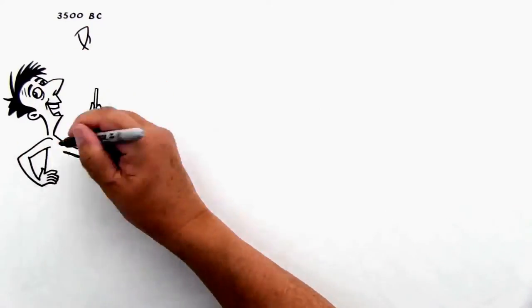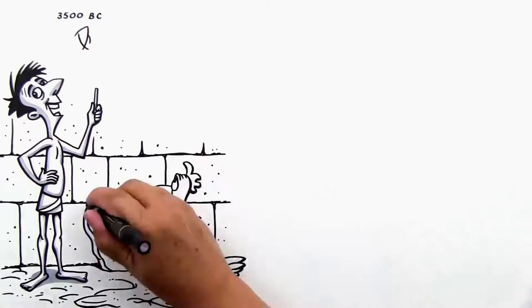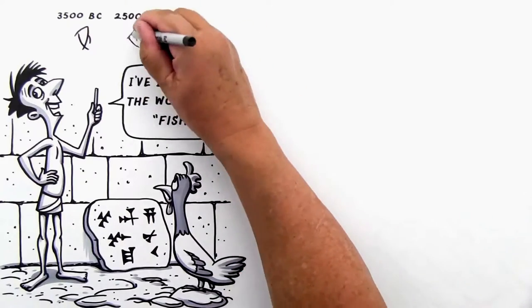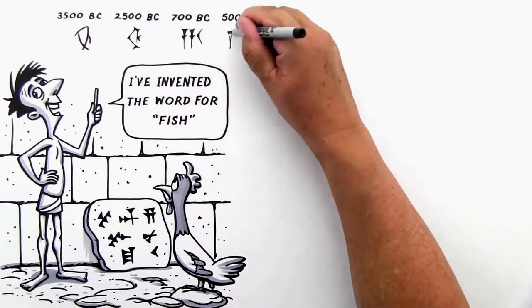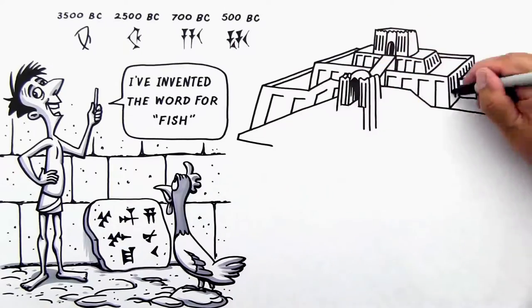In Mesopotamia, they invented the first written language called cuneiform. They started with pictographs, but over time the writing evolved into more abstract symbols. They also got to invent cool names for their buildings, like ziggurat.